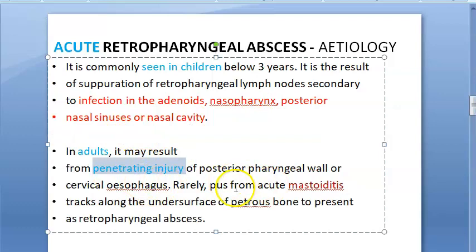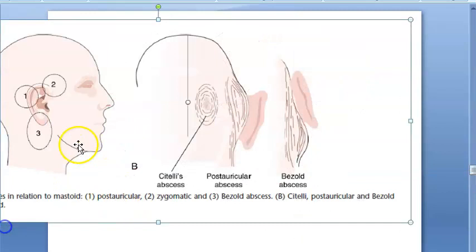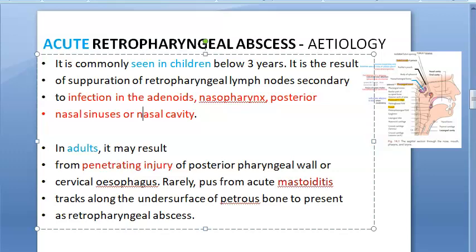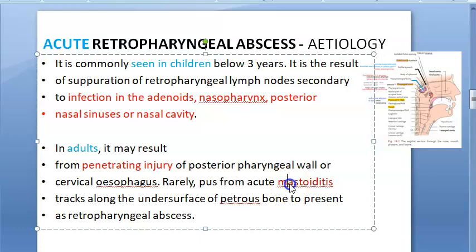In adults, retropharyngeal abscess can occur due to penetrating injury. It can also be the first abscess seen in relation to mastoid infection — the infection trickles down from behind the mastoid and causes a retropharyngeal abscess. So the causes include nasopharyngeal issues, adenoid infection, penetrating injury, and mastoiditis.